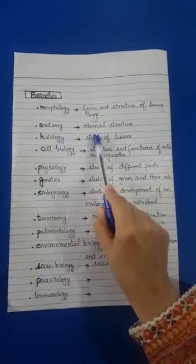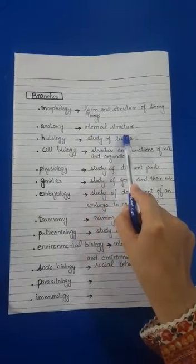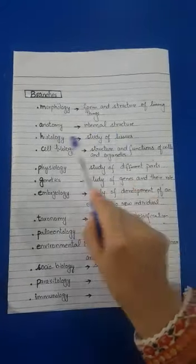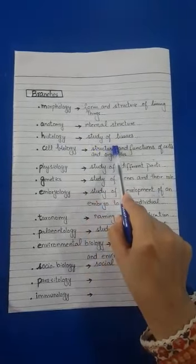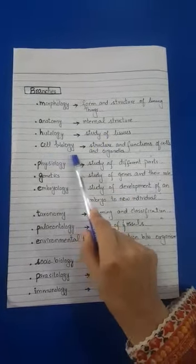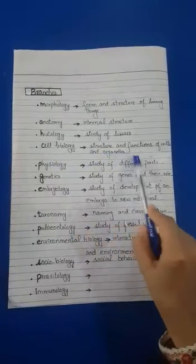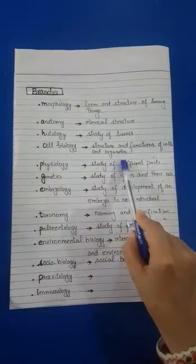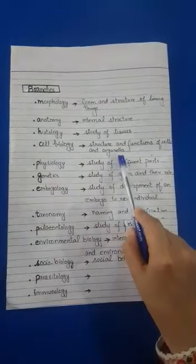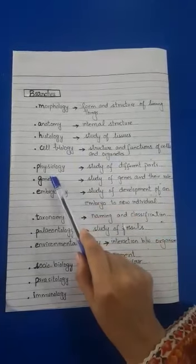Anatomy is a branch of biology in which we study the internal structure of living organisms. Histology is the study of tissues. Cell Biology is the study of the structure and functions of cells and organelles within the body of living things.